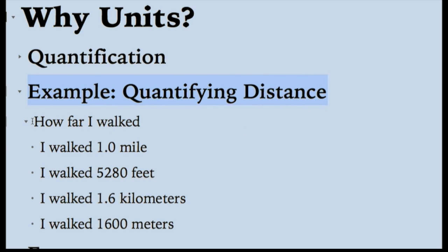For example, quantifying distance. I might ask, how far did I walk? And I might say, I walked one mile. I might say I walked 5,280 feet, and these two ideas are exactly the same, because one mile is the same as 5,280 feet. And similarly, I can say, I walked 1.6 kilometers, which is the same as one mile. Or I walked 1,600 meters, which is the same as one mile and 1.6 kilometers. So, there's many different ways to express distance.